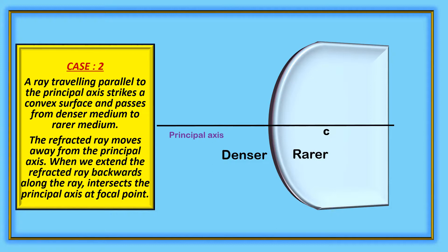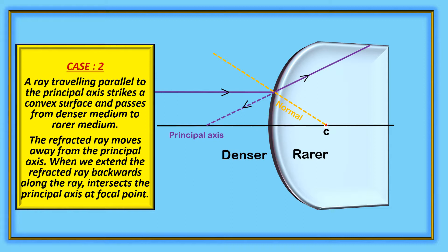When we extend the refracted ray backwards, the ray intersects the principle axis at the focal point. The ray is parallel to the axis, then deviates from the principle axis. When this ray is extended backwards, it reaches the principle axis at the focal point.